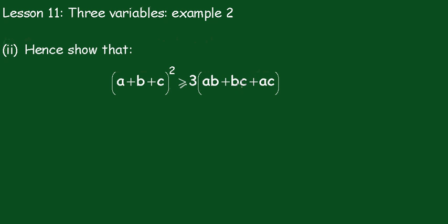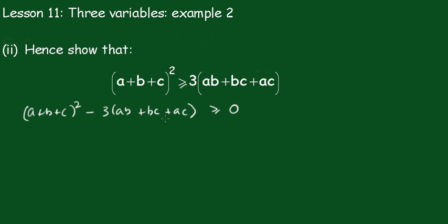Right, what I'll do is take this across the other side and write this as (a plus b plus c) all squared minus 3 times (ab plus bc plus ac) is greater than or equal to 0. So we'll look at the left-hand side and expand all this out.